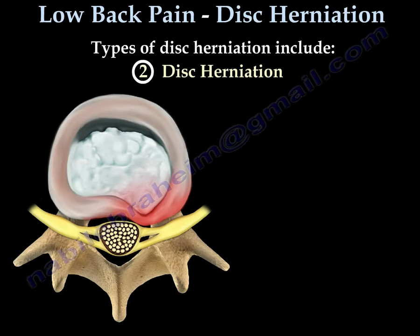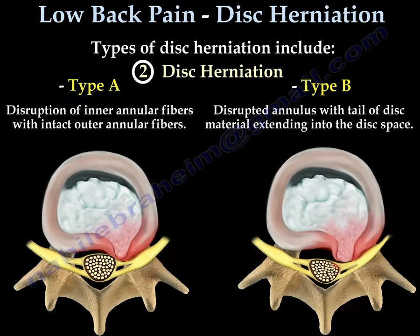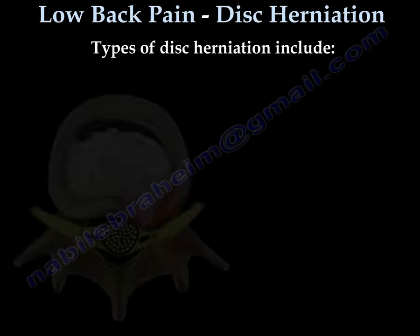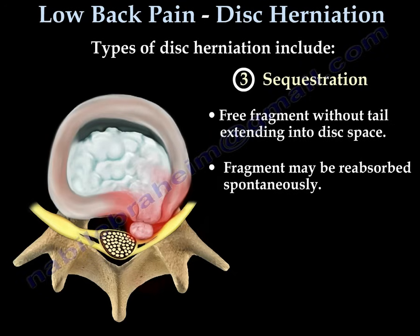The second type is disc herniation, in which there is disruption of the annular fibers, either partially or totally, with a tail of disc material extending into the disc space. The third type is called a sequestered disc — a free fragment without a tail extending into the disc space. The fragment may be reabsorbed spontaneously, and it may actually improve with epidural injection.